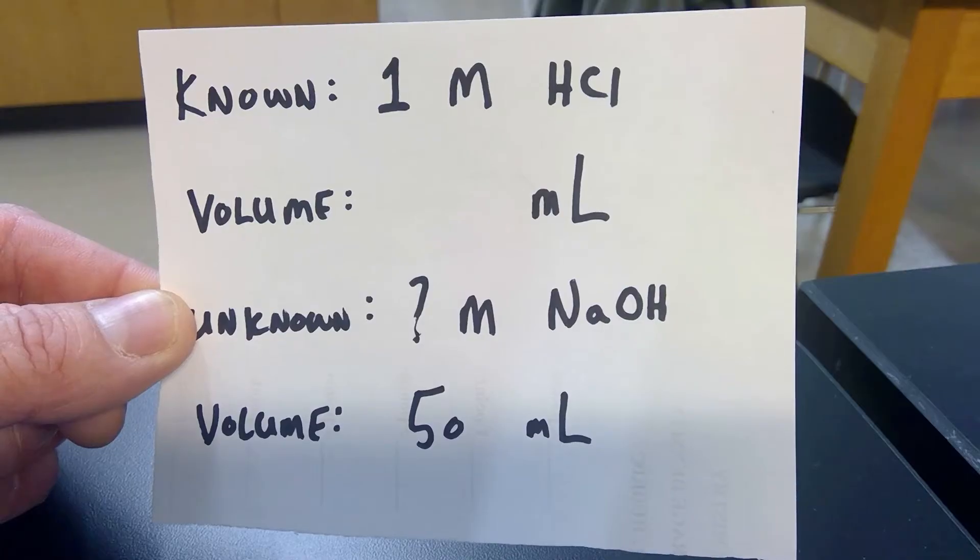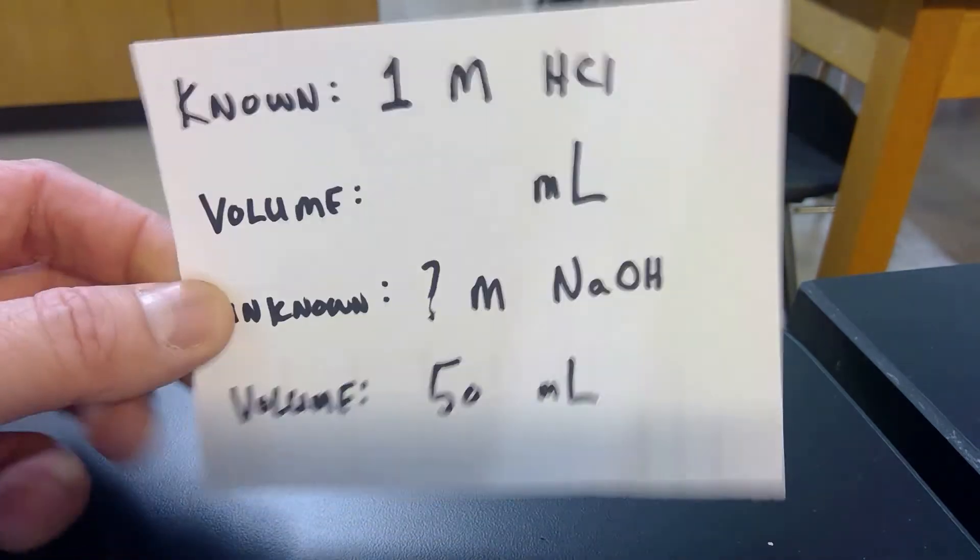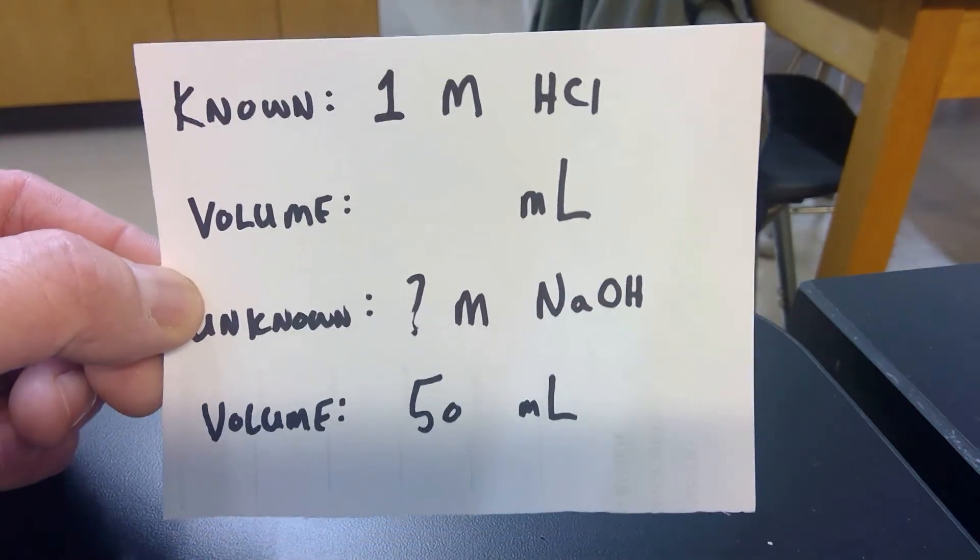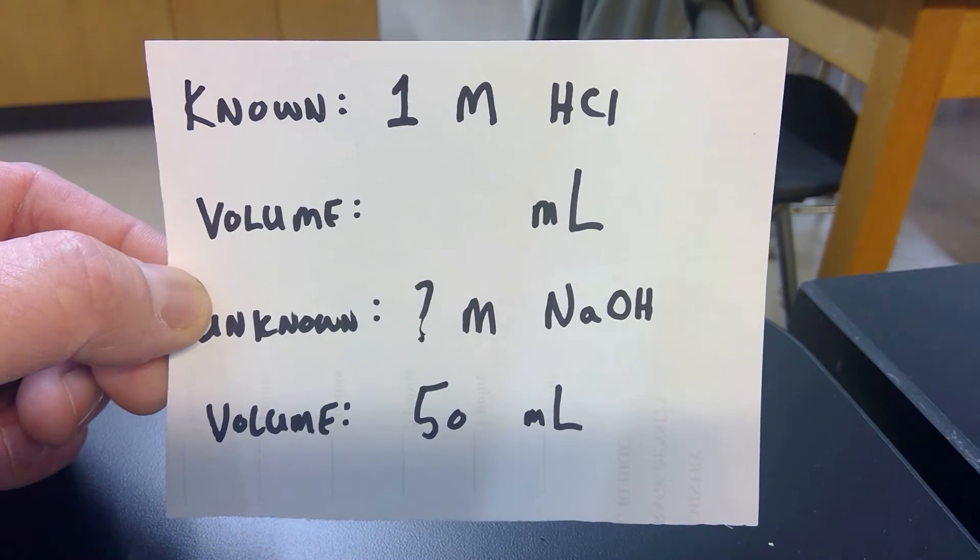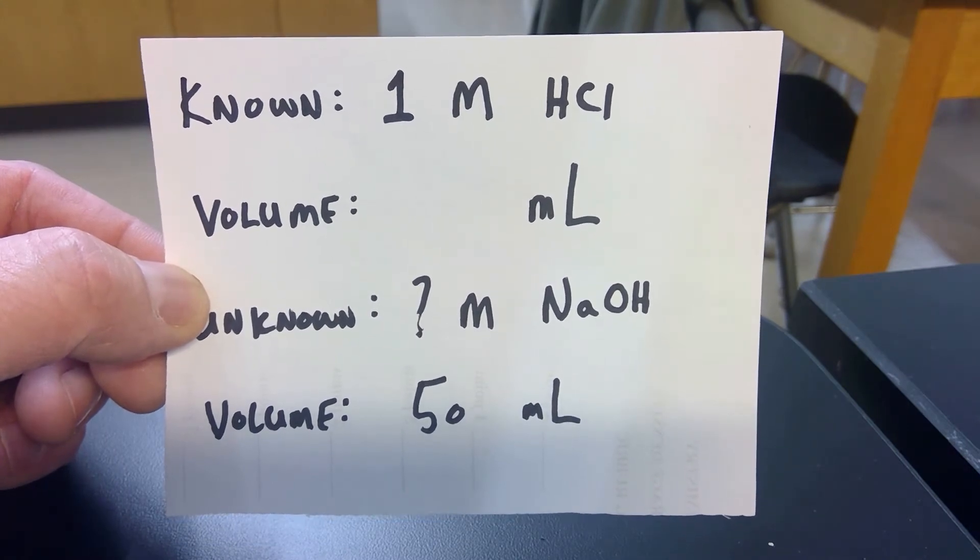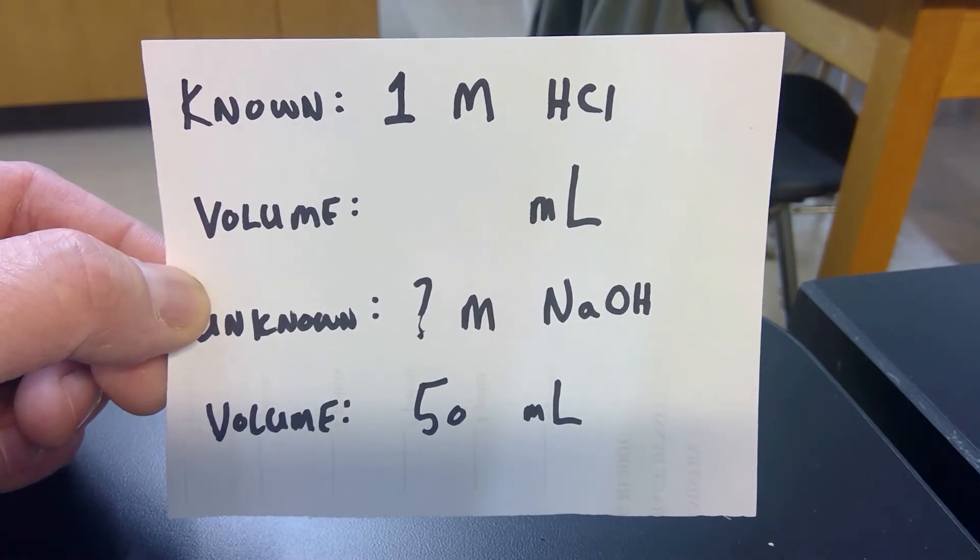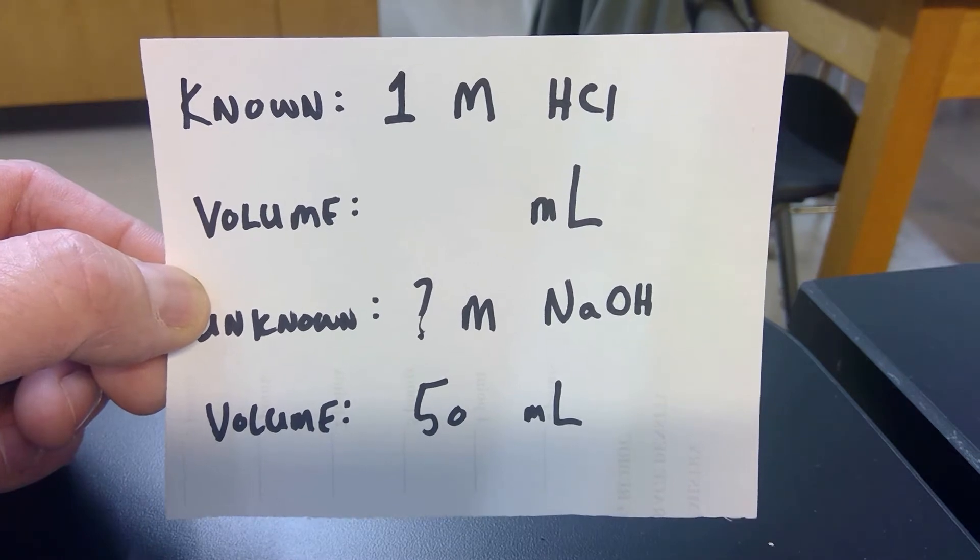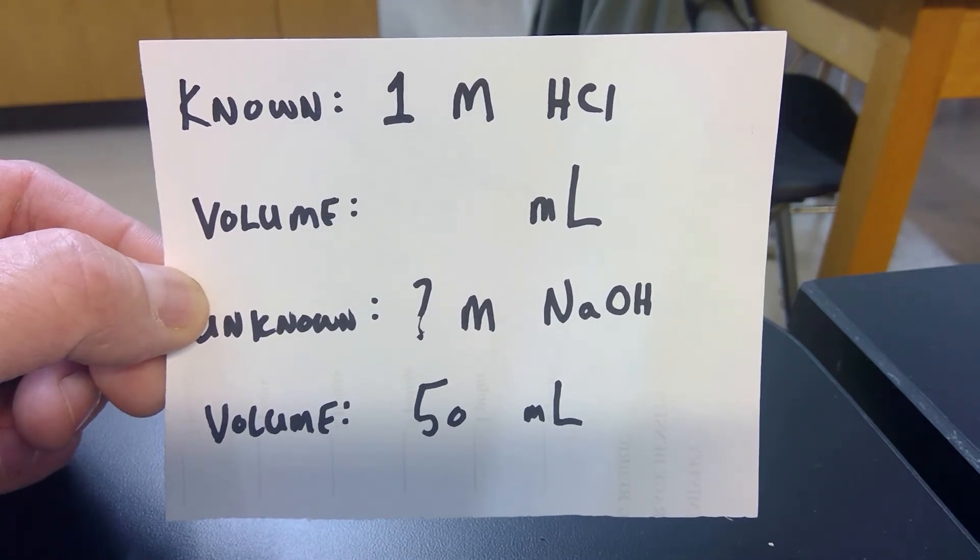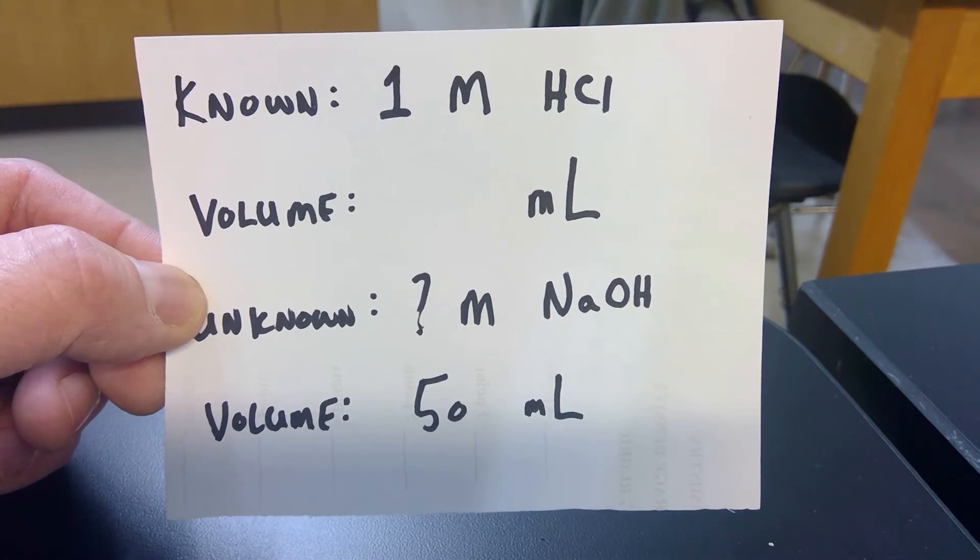So what I've done is I filled this burette with our known. Let's establish what we have. So here's what we know. We have 1 molar hydrochloric acid as our known. That's in the burette.